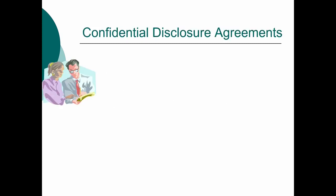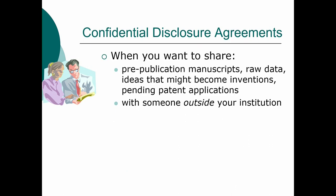I'm going to breeze through the various types of agreements to at least give you a feel for what they are. The first big one — the confidential disclosure agreement — is primarily used when you want to share some stuff that is not yet public knowledge, including your pre-publication manuscripts, raw data, and potential inventions, at least until you've gotten a patent application on file. And you want to do it with somebody outside your organization — when you're talking to somebody down the hall, you don't have to worry about it.